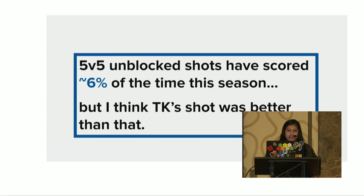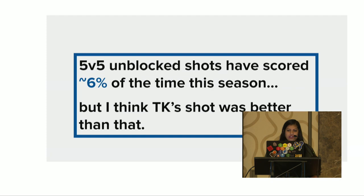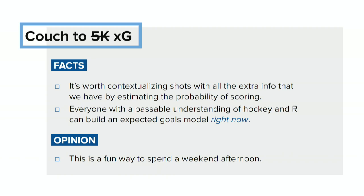Unblocked shots — blocked shots are when you shoot and someone stands in front and it doesn't go near the net. Unblocked shots that actually make it to the net at 5v5 have scored about 6% of the time this season. But I think Travis Konechny's shot was better than that. So how can we quantify this? This is where I'm going to introduce expected goals — and all of you can do this right now. It's worth contextualizing shots with all this information we have by estimating the probability of scoring for each shot, instead of saying all of them are equal. Everyone with a basic understanding of hockey can build an expected goals model right now.